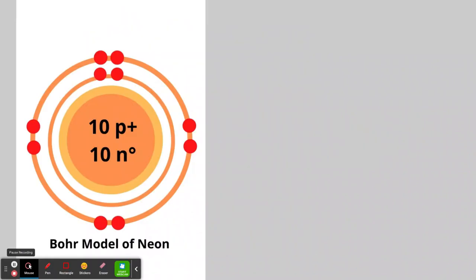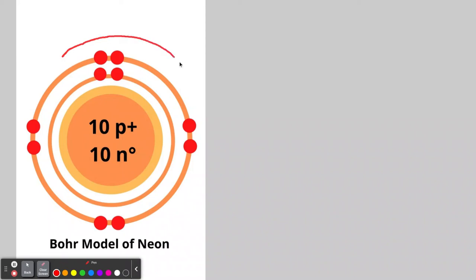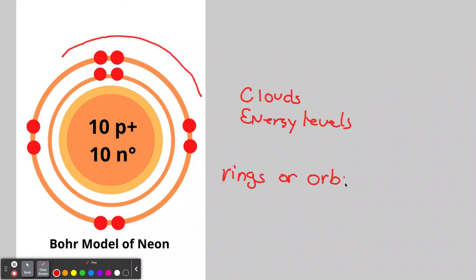Neon is a noble gas with 10 protons and 10 neutrons. Its first ring is full with two electrons, and its second ring is full with eight electrons. Since both rings are full, any additional electron would need to go into a third ring. These rings are normally described as clouds or energy levels, though for teaching we say rings or orbits. Electrons do not revolve around the nucleus like planets around the sun.